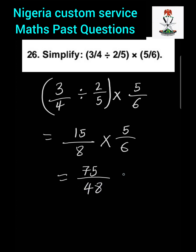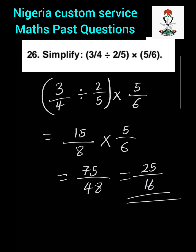Multiplying the numerators: 15 multiplied by 5 is 75. Multiplying the denominators: 8 multiplied by 6 is 48, giving us 75 over 48. We then reduce the fraction — 3 goes into 75 twenty-five times, and 3 goes into 48 sixteen times — so the answer is 25 over 16.